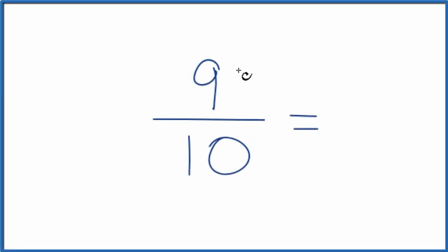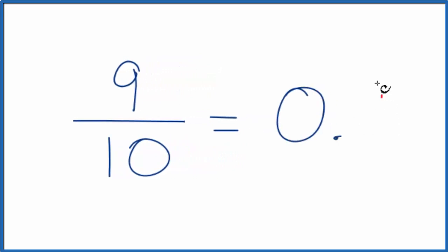If you're asked to express the fraction 9 tenths as a decimal, here's how you do it. First, you could just take 9 and divide it by 10 on your calculator. That would give you 0.9.